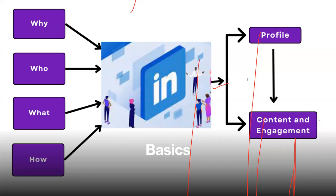The next thing is the What — what do you want to communicate? If you're looking for board roles you want to speak to senior executives; if you're job searching, to recruiters; if you want thought leadership, to industry experts. The What naturally flows from the Who. Then there's the How — your communication style. You can use videos, polls, articles, and more.